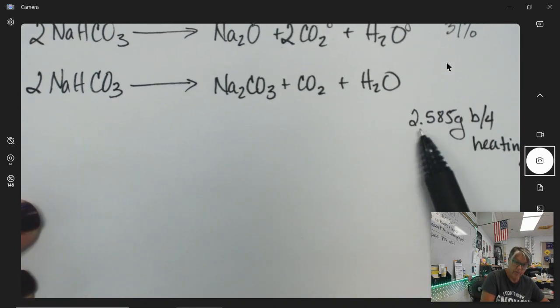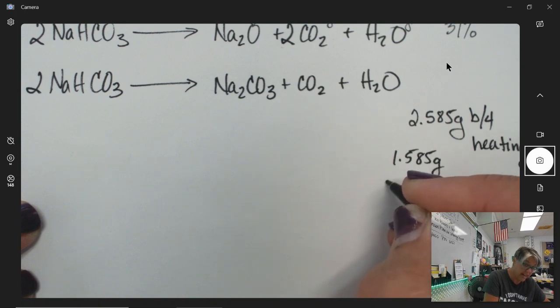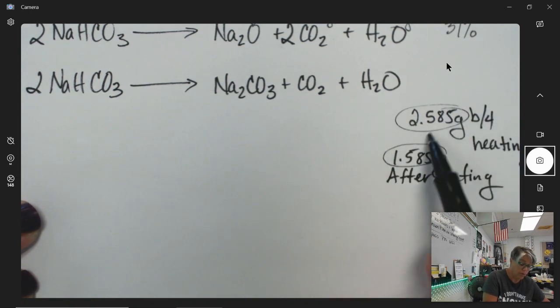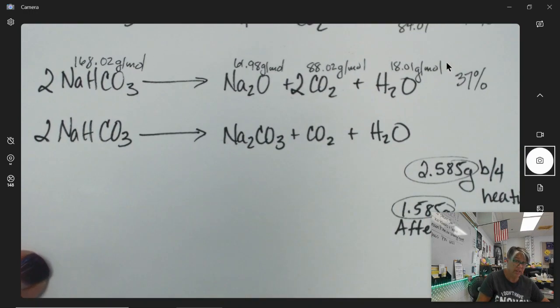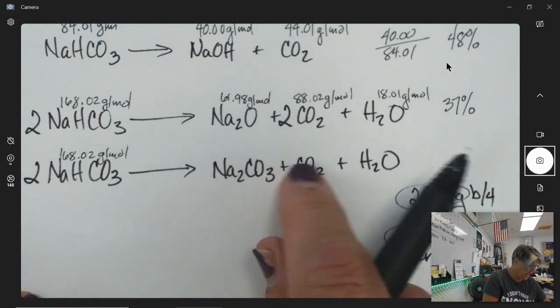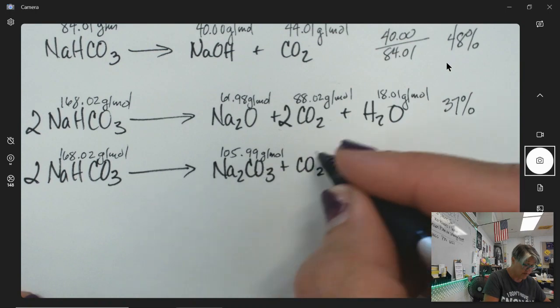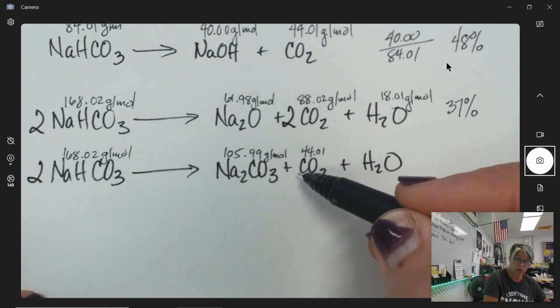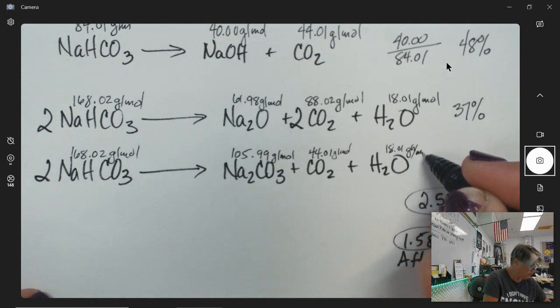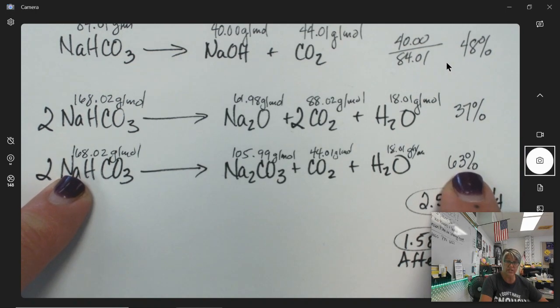Let's say after heating, we get 1.585 grams after heating. So, this is the part, this is the whole. This one would still be 168.02 grams per mole. And we got 105.99 grams per mole. If we do the molar mass of this, 44.01 grams per mole and 18.01 grams per mole. And if I look at this, 105 over 168, that is, I would have 63% of my original mass still there.